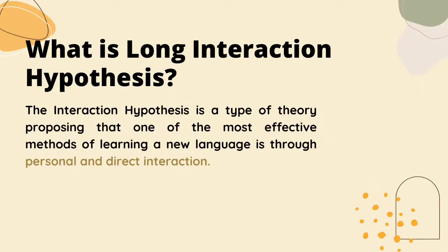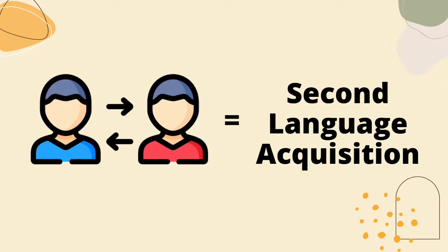The long interaction hypothesis is a type of theory proposing that one of the most effective methods of learning a new language is through personal and direct interaction. This theory highlights the importance of interaction in the process of language acquisition. Without having much face-to-face or direct interaction, the second language acquisition, or SLA, is believed to be not that successful.